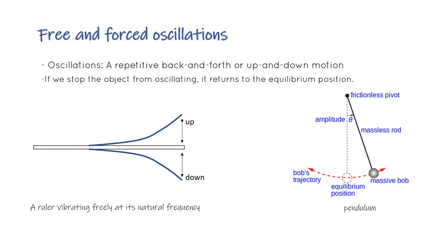An object oscillates when it moves back and forth repeatedly on either side of some equilibrium position. This equilibrium position is the center point. We see this in two forms in daily life: back and forth motion, and up and down motion - for example, a vibrating ruler vibrating at its natural frequency.